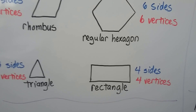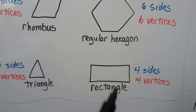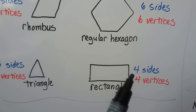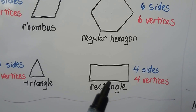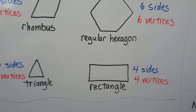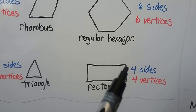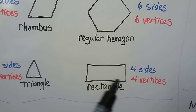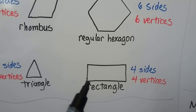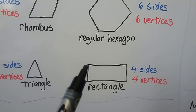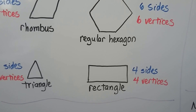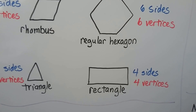A rectangle has four sides — one, two, three, four — and it has four vertices: one, two, three, four. Four corners, four vertices.